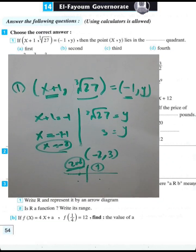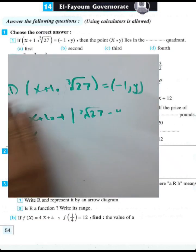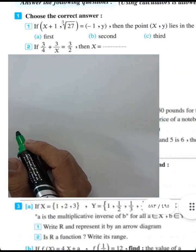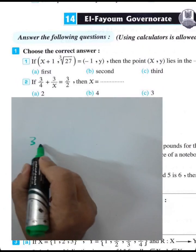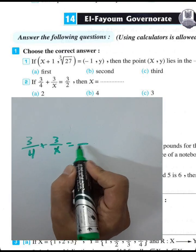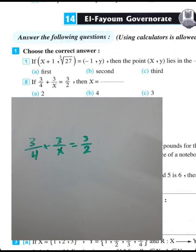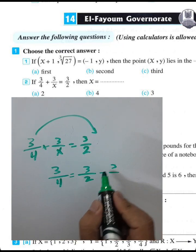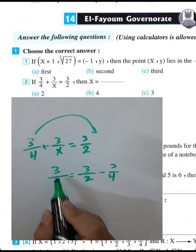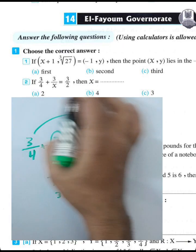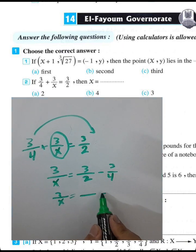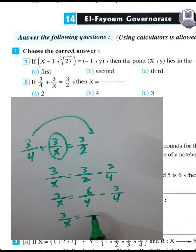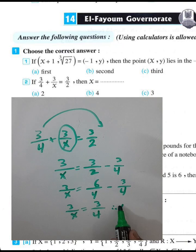Question 2: Given 3/4 + 3/x = 3/2, find the value of x. Move 3/4 to the right-hand side by changing the sign: 3/x = 3/2 - 3/4. Finding the difference between the two fractions: 3/x = 6/4 - 3/4 = 3/4. Therefore x = 4.